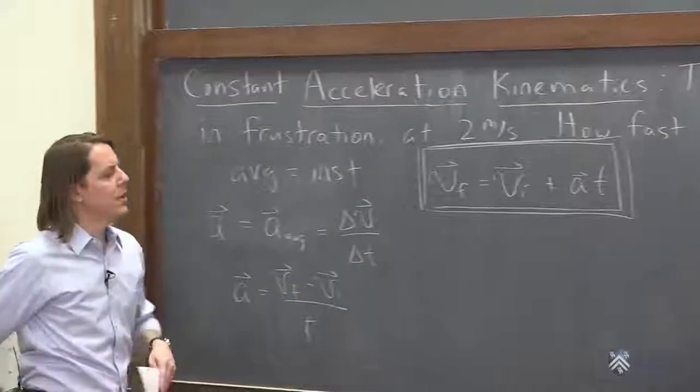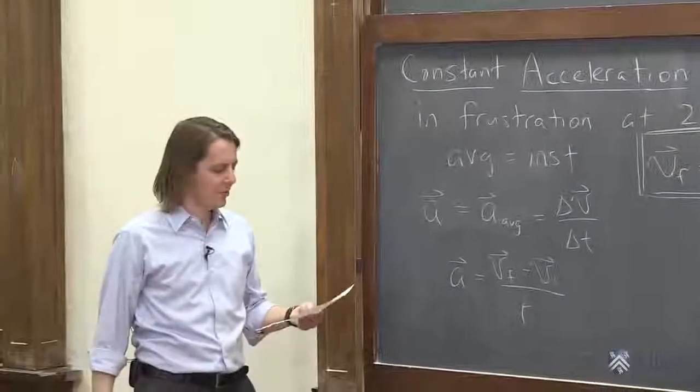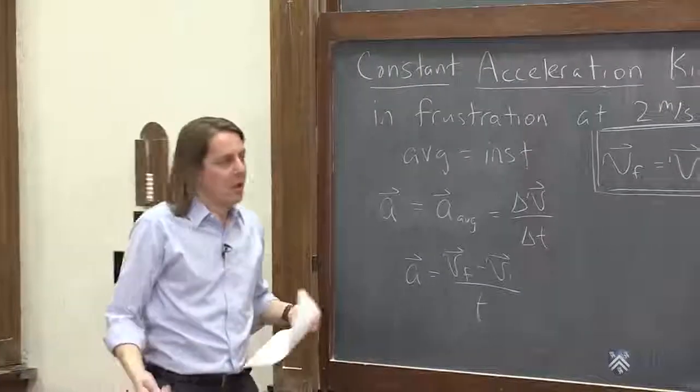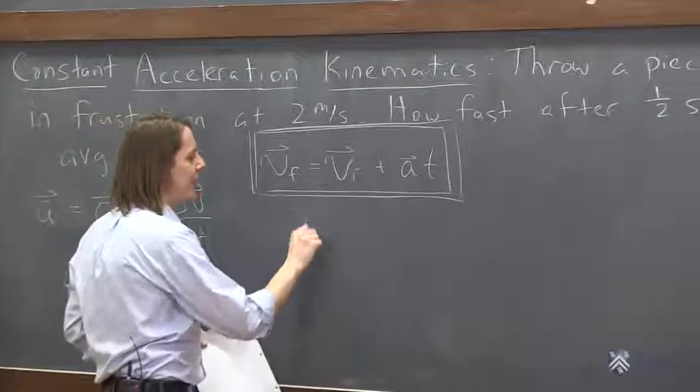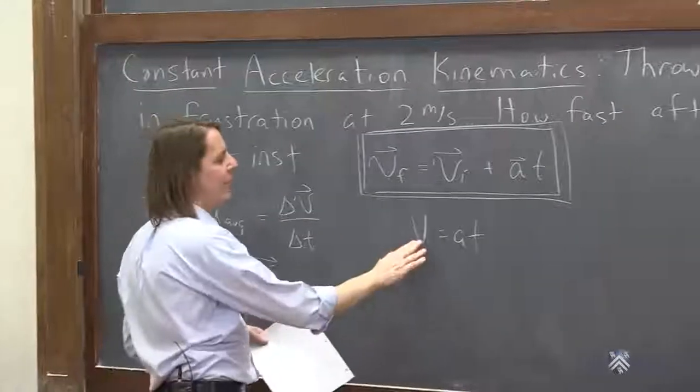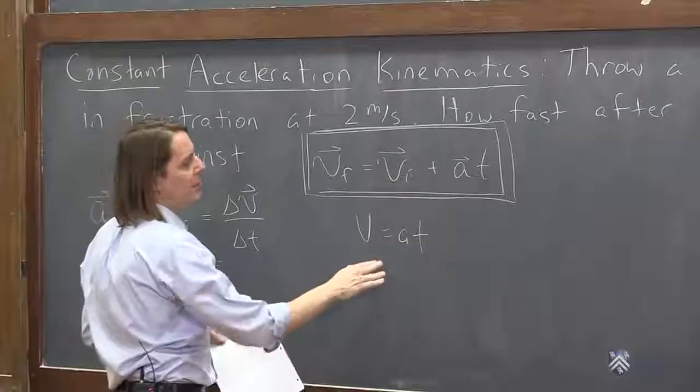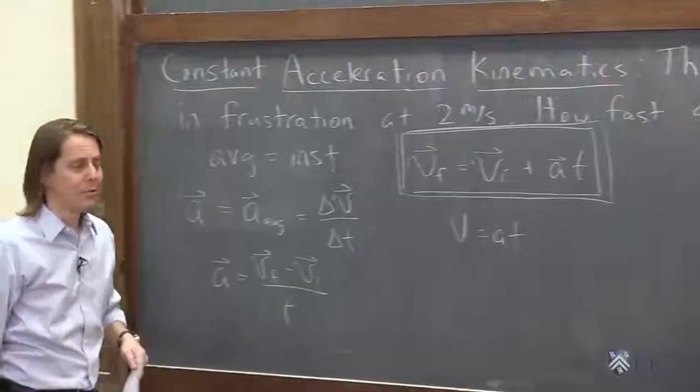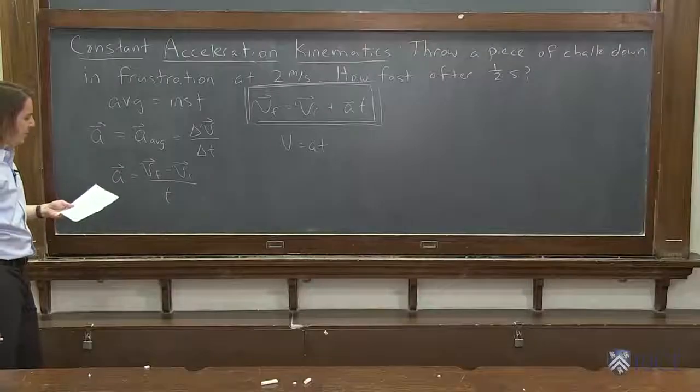This is how you figure out how fast something is going after it is accelerated for a while. Maybe this one has a street name that v equals at, if you're being simple. That was just the velocity you got to if you started at 0, without all the vector notation all over it. So you may have seen this one before.